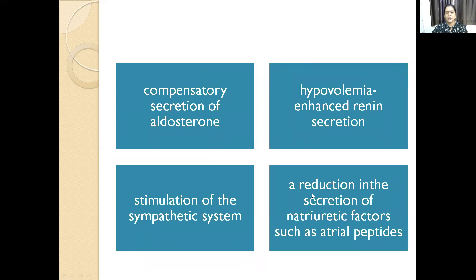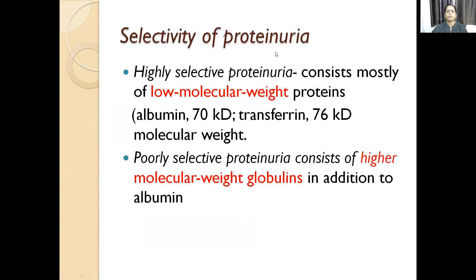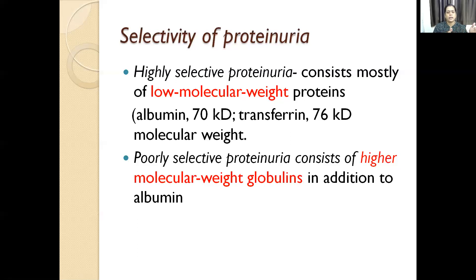The glomerular basement membrane filters by size-dependent and charge-dependent filtration. Highly selective proteinuria consists mostly of low molecular weight proteins, while poorly selective proteinuria consists of high molecular weight proteins. In nephrotic syndrome, initially albumin and low molecular weight proteins are excreted; in poorly selective proteinuria, globulins are also excreted.